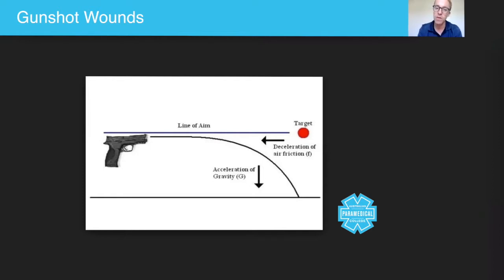If you see a small entrance hole and you go and look for the exit hole and there isn't an exit hole, it means that the bullet is still inside the patient. There are added complications from that, including infection and internalized bleeding.